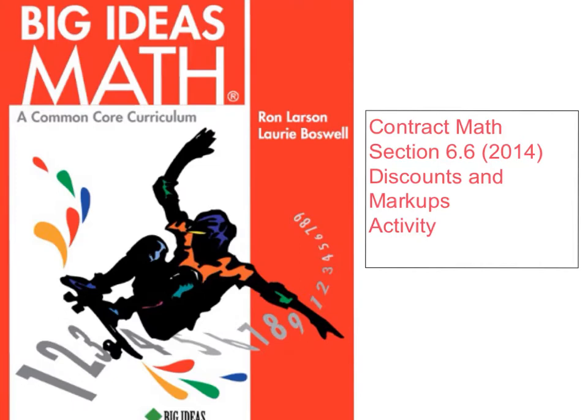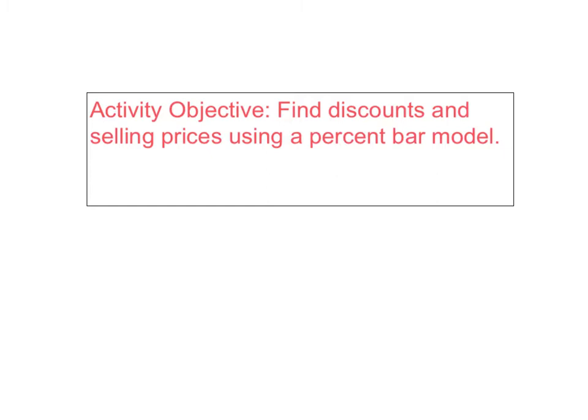Pause while you write Section 6.6, 2014, Activity in your Math Notebook. Pause again while you write today's activity objective in your Math Notebook. Today's objective is find discounts and selling prices using a percent bar model.